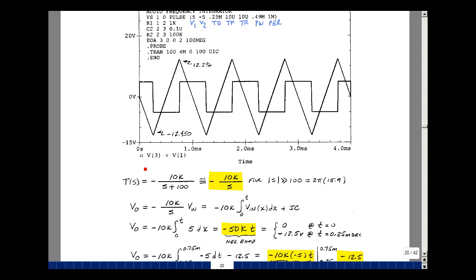So bring the 5 out in front. So you get a minus 50k. The integral of 1 dx is x. Upper limit minus the lower limit, which would be t minus 0. So I get a negative ramp. So we're seeing exactly that. It's going down. And then t equals 0, we have 0. And then t equals 0.25 milliseconds. Plugging in here, I get 12.5 volts, but negative. And I have very close to the value here.